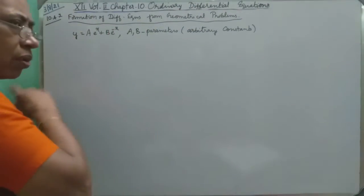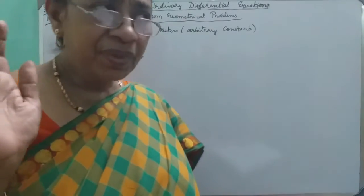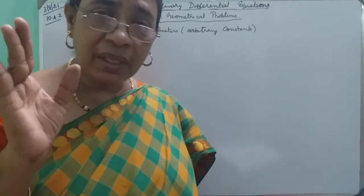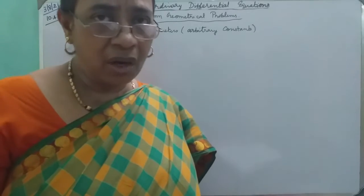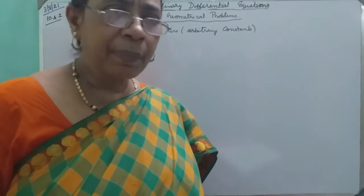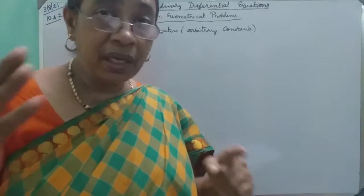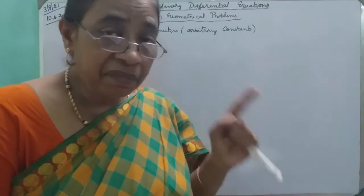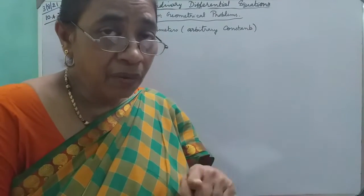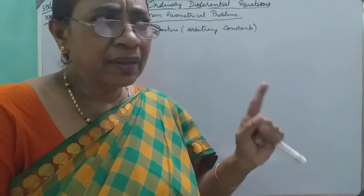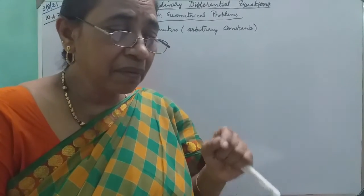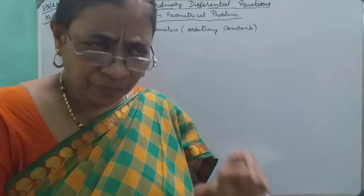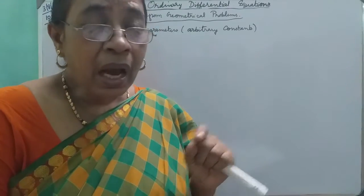So, we have a lot of points. Here a and b are parameters — they are arbitrary constants. If we are going to find a differential equation, we can eliminate the arbitrary constants.